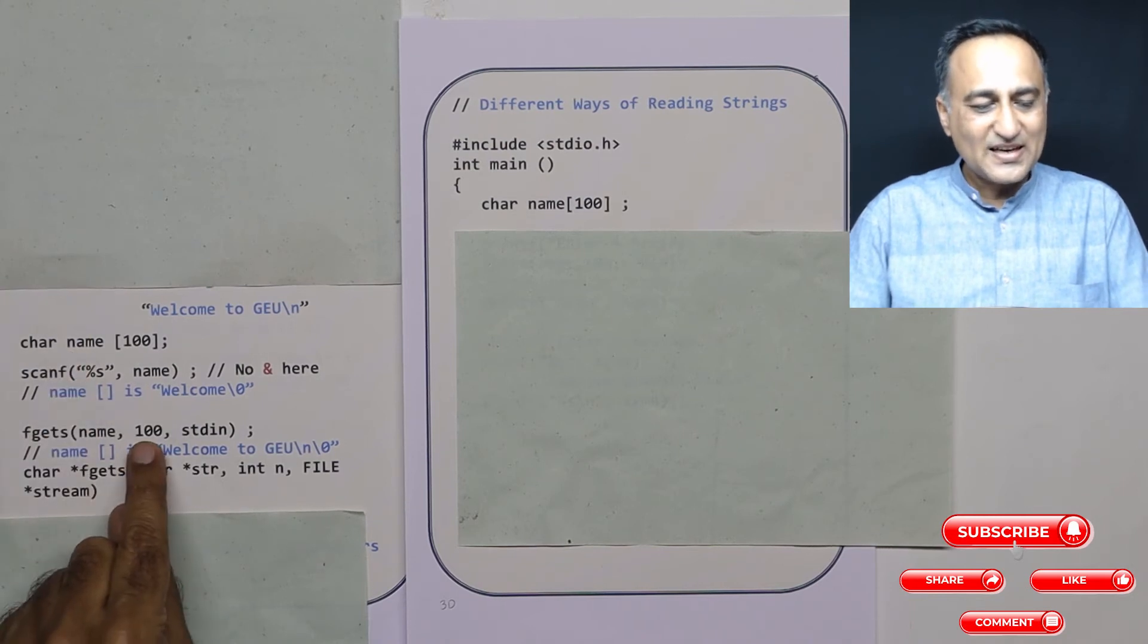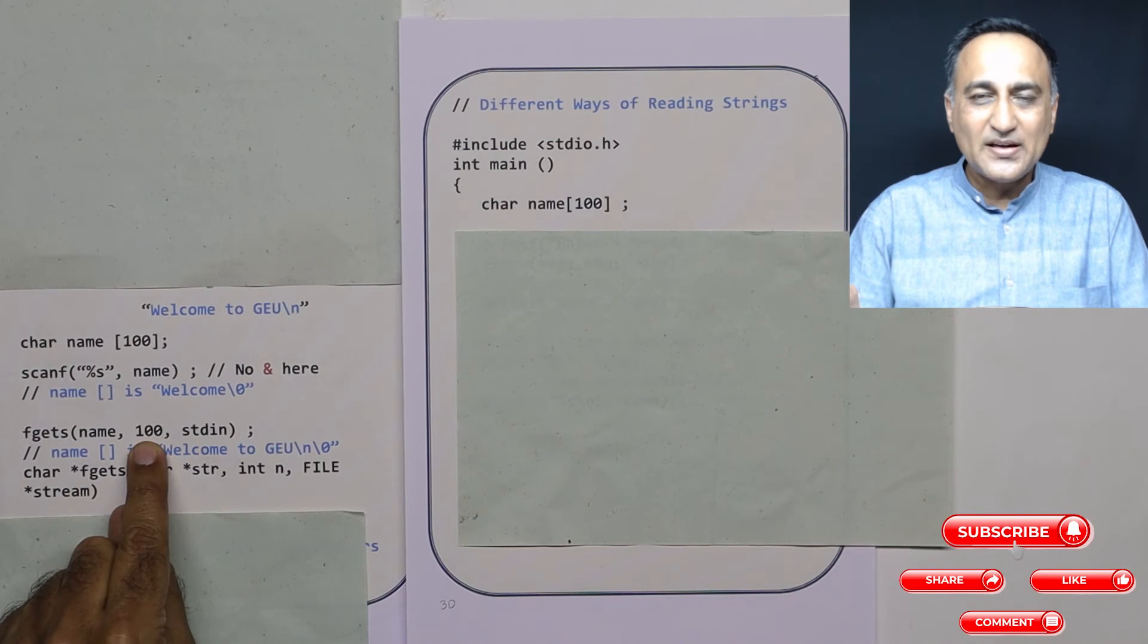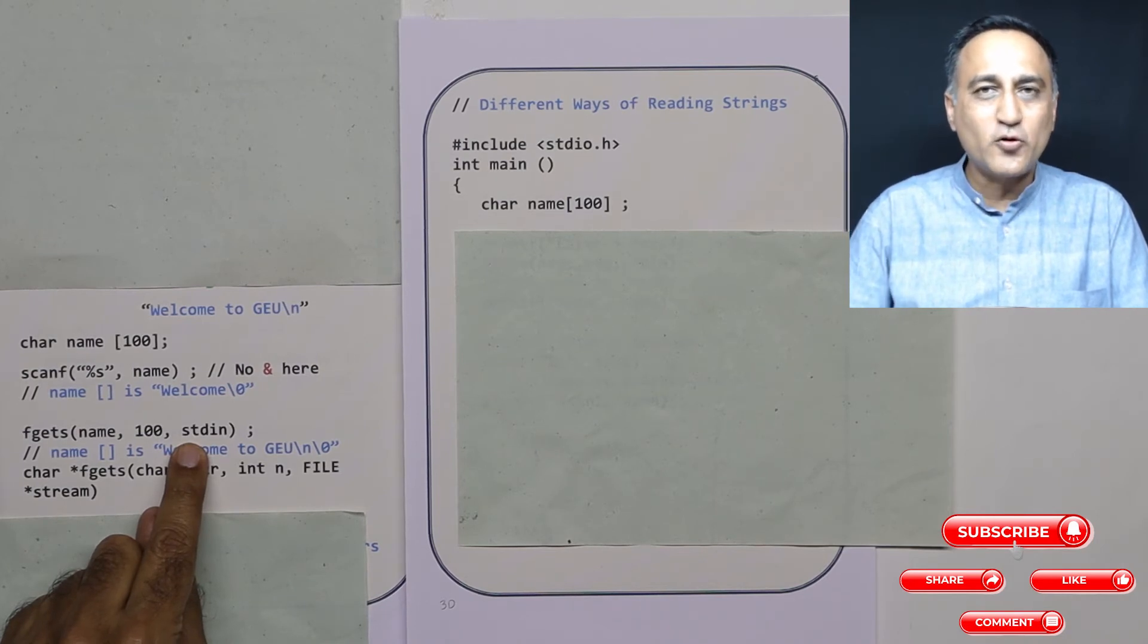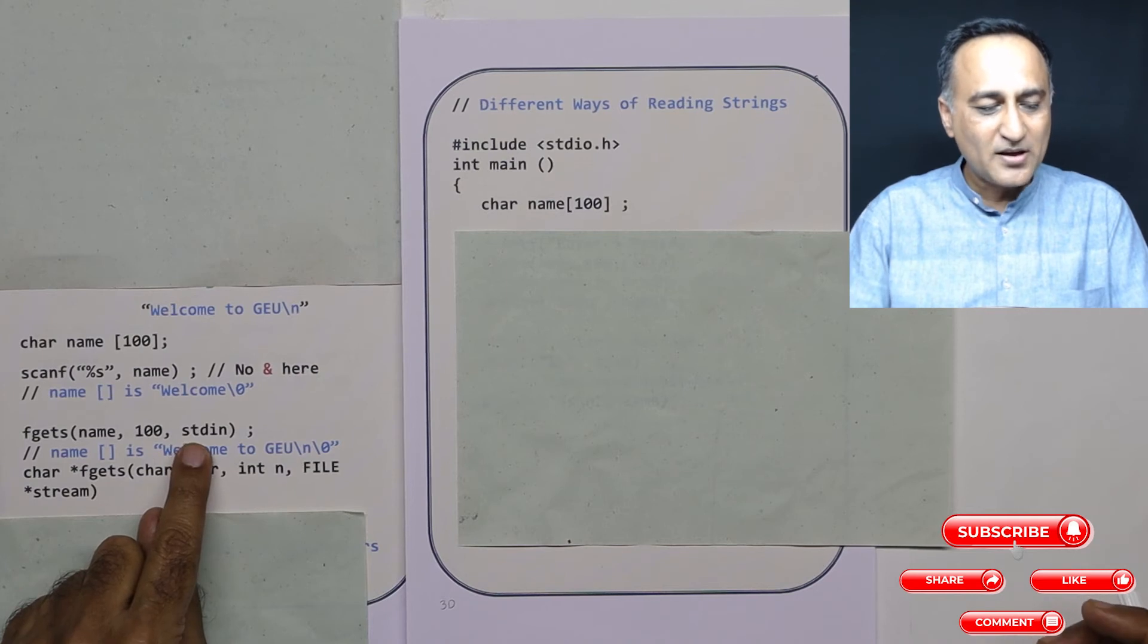This indicates a pointer since name is a name of array, this is an address. This is the maximum length minus one characters it will read or accept. Then stdin indicates what is the source of input you're going to give, or from where you're going to give the input. I'm going to give the input from my keyboard.